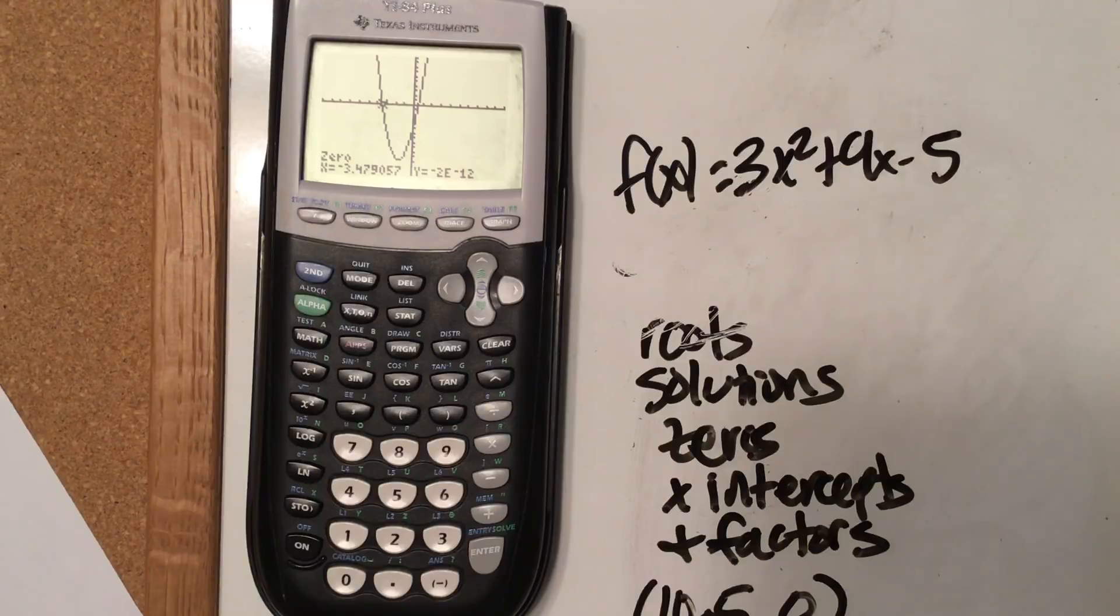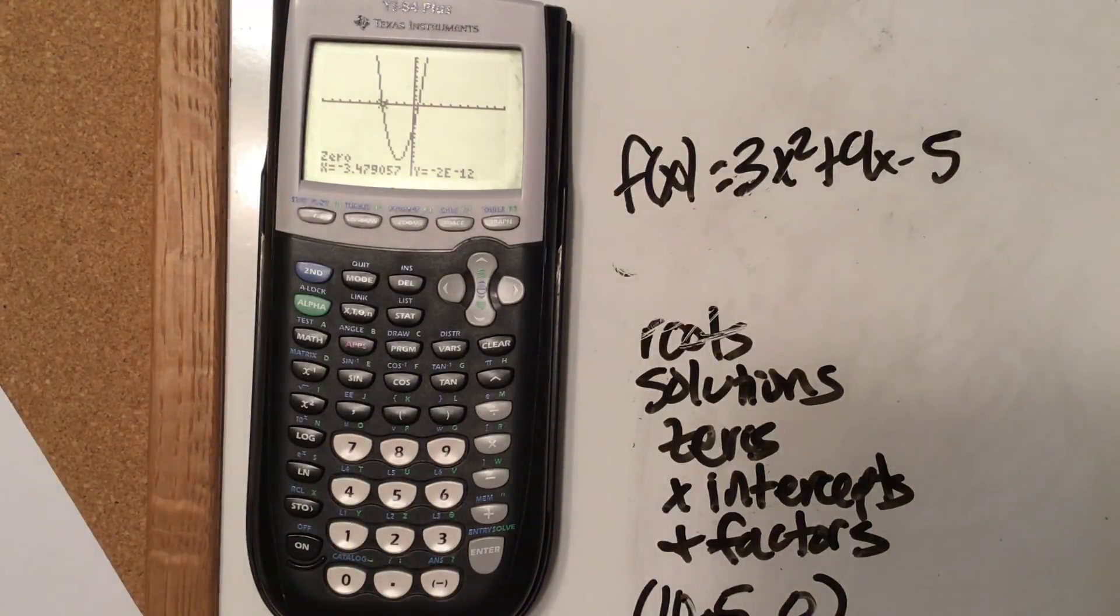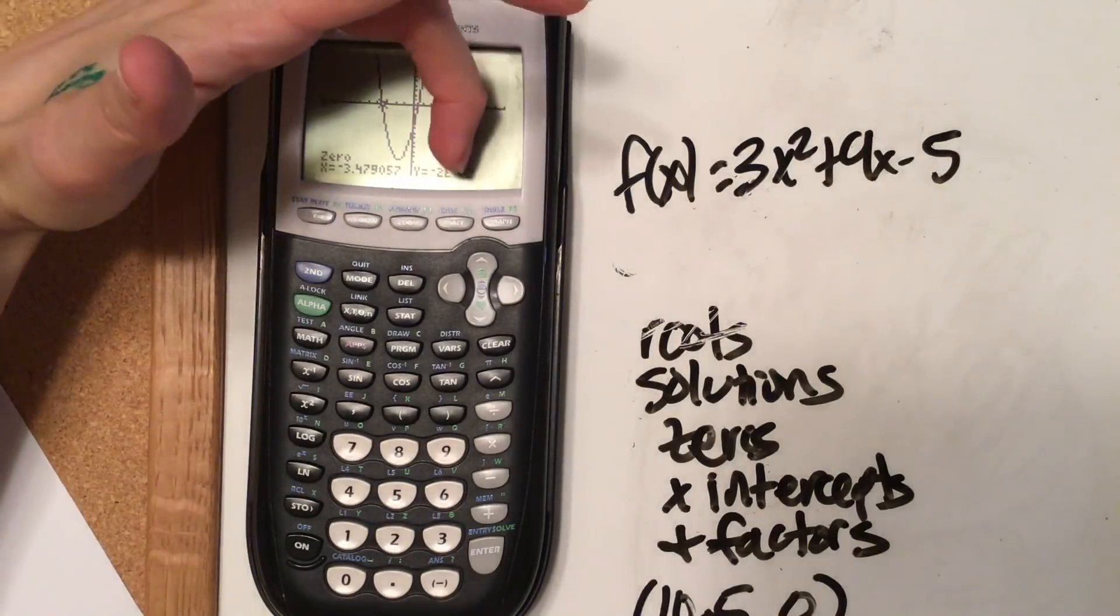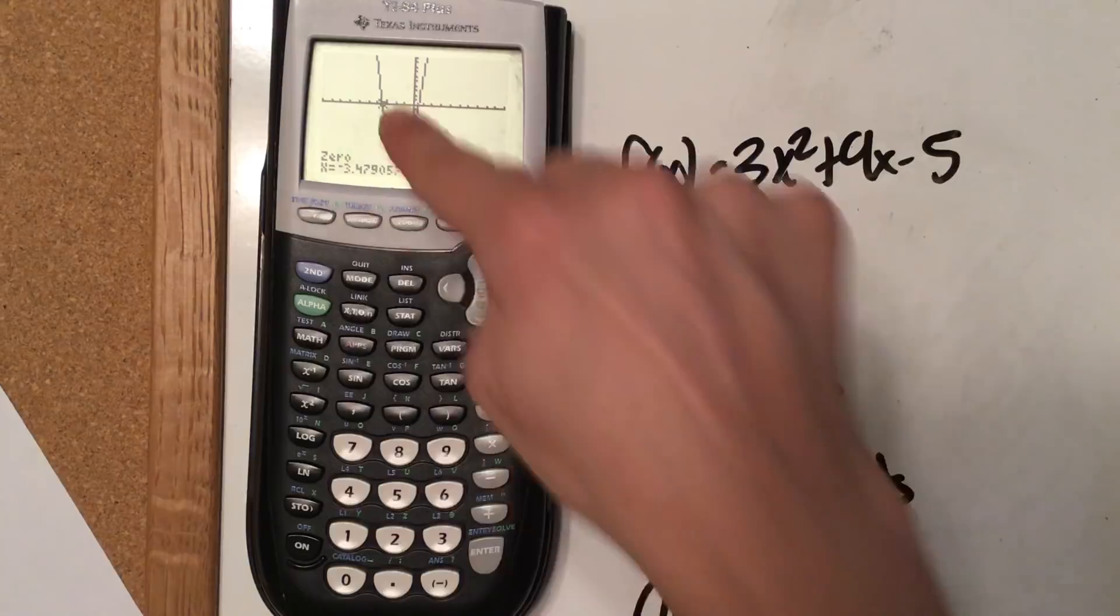You're moving the decimal left 12 times, right? So it's 0.0000, and you've got 11 zeros, and then a 2, which is really close to 0, so it's just going to be 0. So if you see with an e, that means that's your scientific notation, that's times 10 to whatever the power. If it's negative, it's going to be really close to 0, so you can just write 0. So that's the first zero, but I want the second one as well.